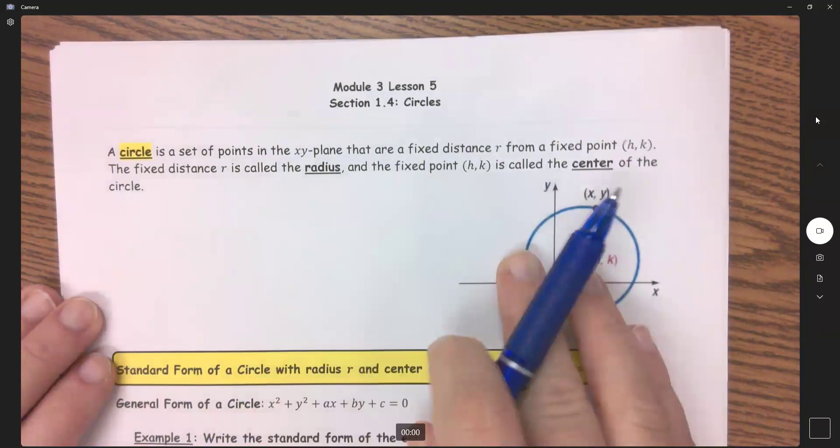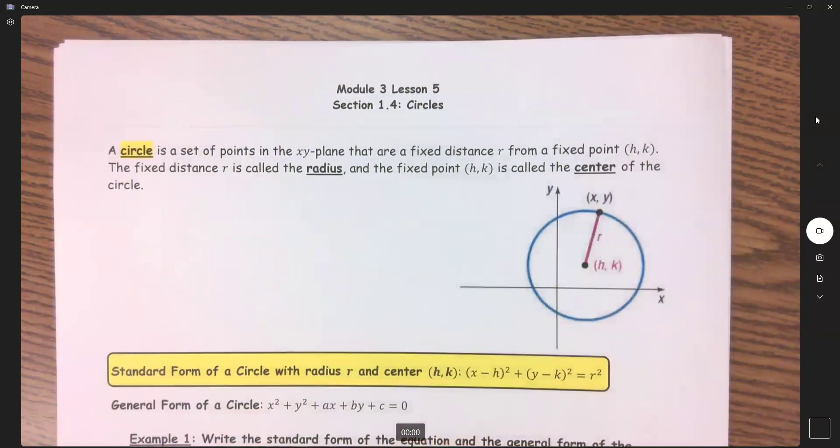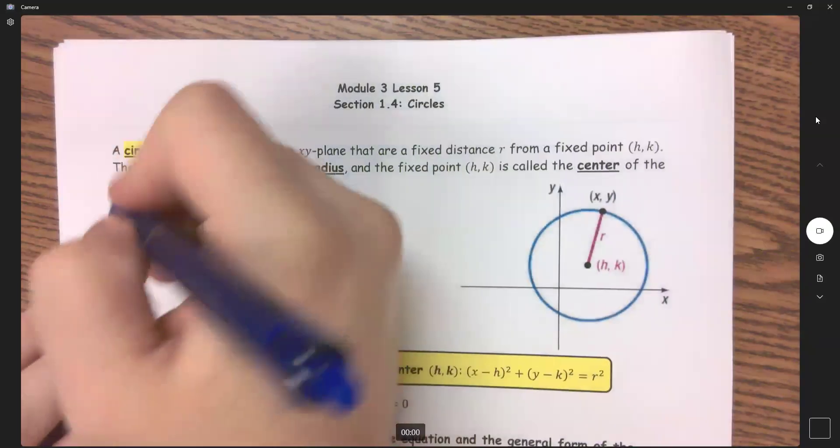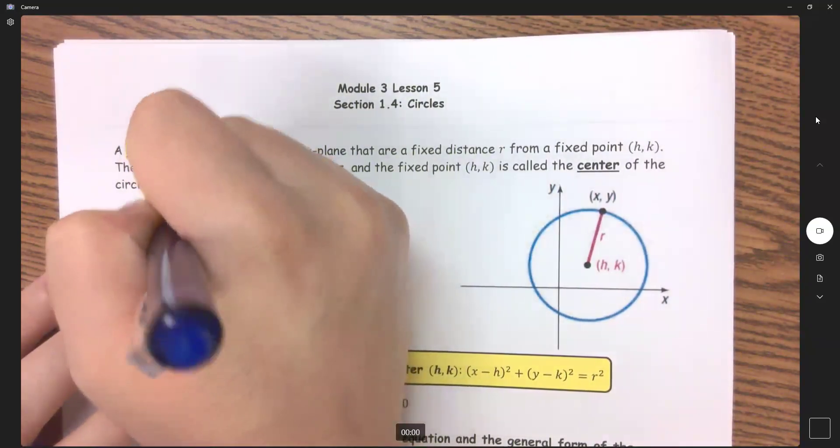So let's kind of discover what the equation of a circle is. And it comes directly from what we went over last lesson, your distance formula. So I'm going to rewrite my distance formula here.